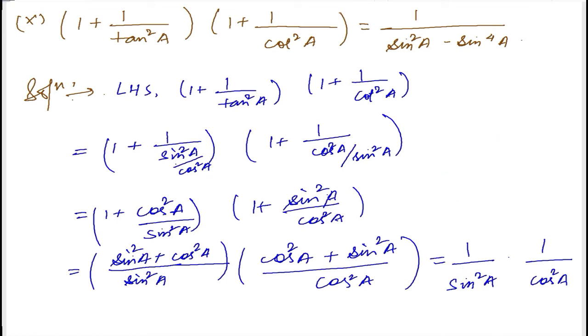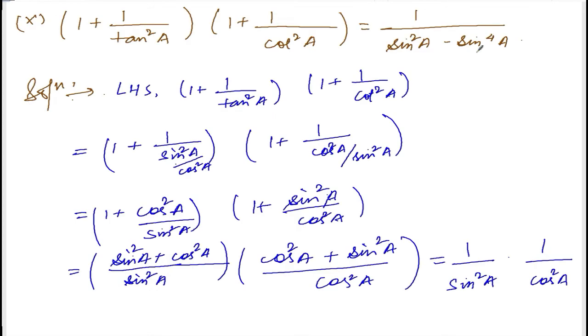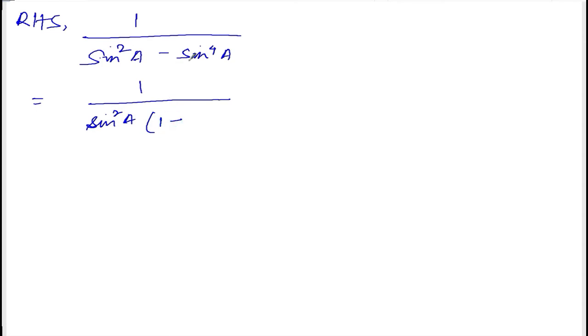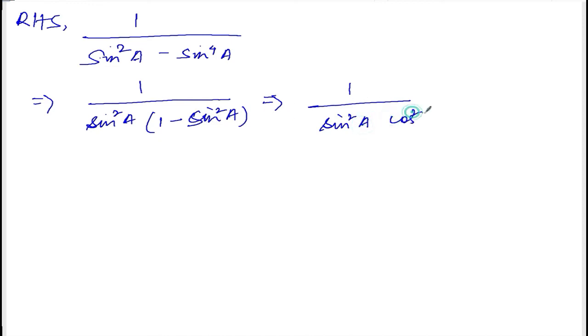Now let us take the right hand side. Right hand side is 1 divided by sin squared a minus sin to the power 4a. Take sin squared a common from the denominator: sin squared a times 1 minus sin squared a, which is cos squared a. So right hand side is 1 divided by sin squared a cos squared a.